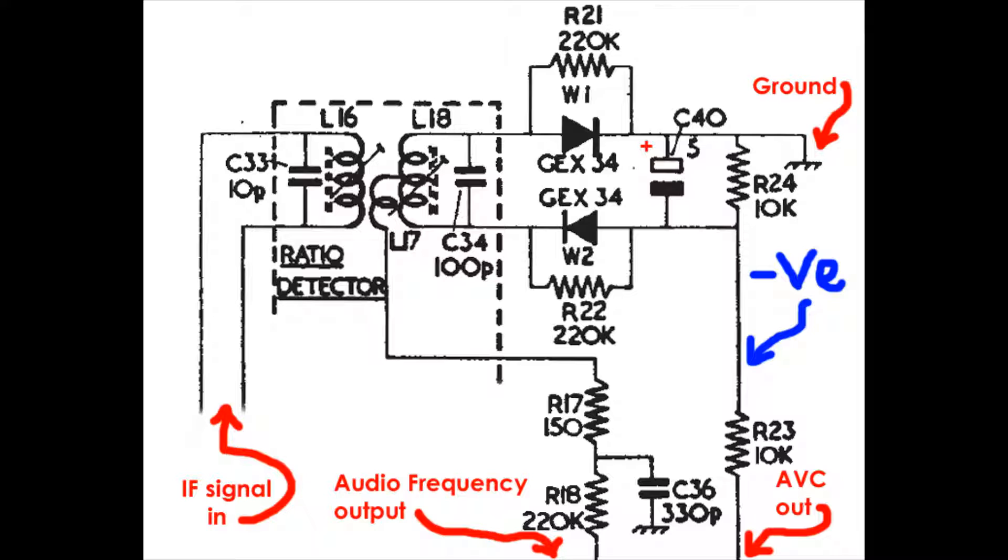The level of charge across C40 is largely independent of frequency change. It is the amplitude of the frequency that it sees. The voltage developed across C40 is taken off the negative end of the capacitor. And that goes off to provide the negative drive voltage for the automatic volume control line, the AVC line.